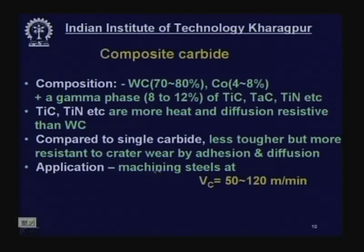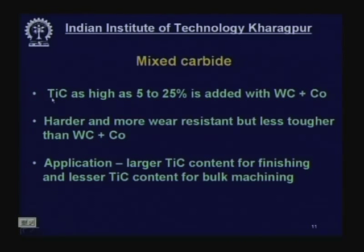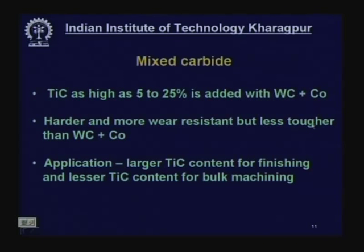Composite carbide is very good for steel application: machining at 50–120 meters per minute — 120 for soft steels like mild steel, around 50 for harder steels. It can also be used for light intermittent cutting. A mixed carbide type adds titanium carbide (5–25%) into tungsten carbide and cobalt. Larger titanium content (~25%) is for finishing, as titanium carbide is very heat resistant and reduces wear at high speed.